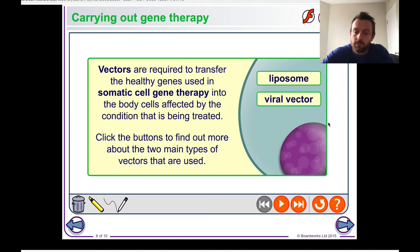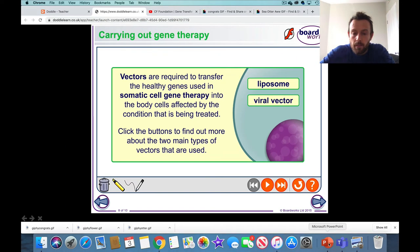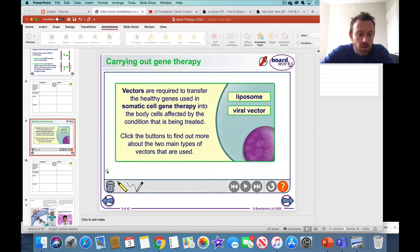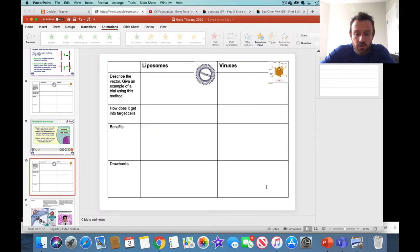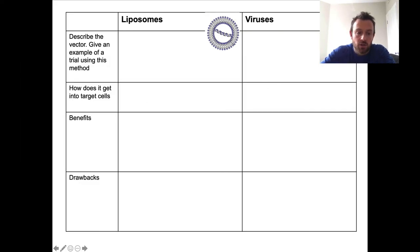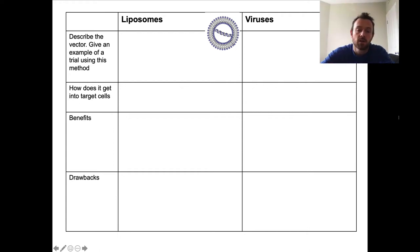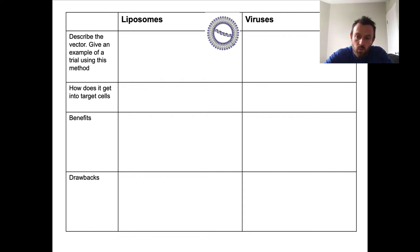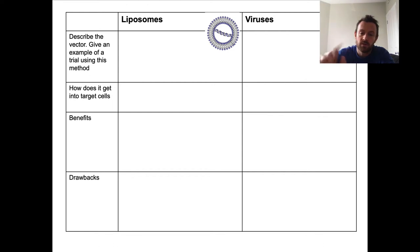Now fill out your table using your textbook, covering the benefits and drawbacks of each vector. Once you've done that we'll move on and look at a slightly newer technology. Pause and fill in the table.